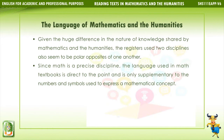The language of mathematics and the humanities. Given the huge difference in the nature of knowledge shared by mathematics and the humanities, the registers used by the two disciplines also seem to be polar opposites of one another. Since math is a precise discipline, the language used in math textbooks is direct, to the point, and is only supplementary to the numbers and symbols used to express a mathematical concept.